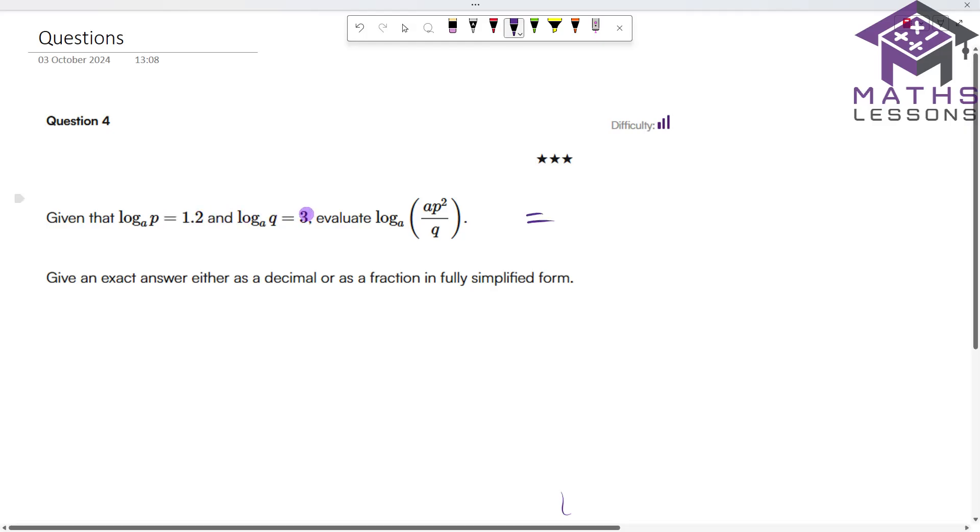So let's just put an equal sign in here, and the first thing I'm going to do is deal with the division. If we remember our division law, we will know that log a of p squared minus log of a q will equal this.